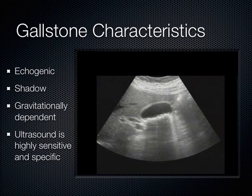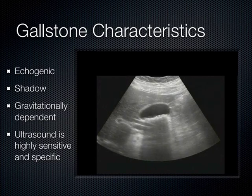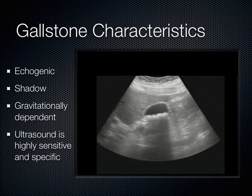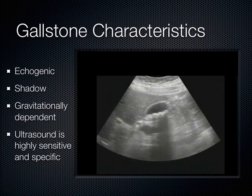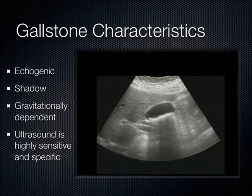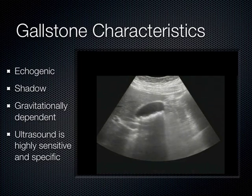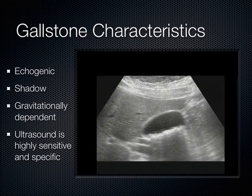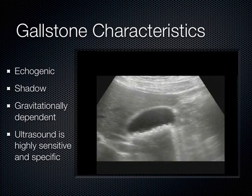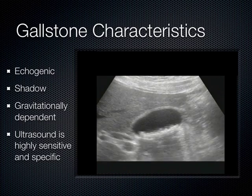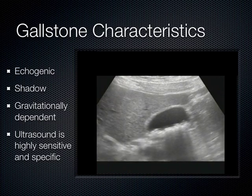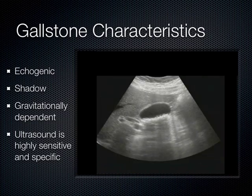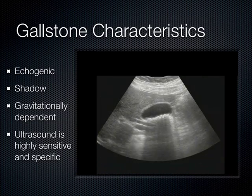When you find gallstones, they're hyperechoic, they shadow, and they're gravitationally dependent — they move around as you reposition the patient. These features make ultrasound the test of choice, more sensitive and specific than CT. With CT, you can miss a gallstone in a single cut, whereas ultrasound catches things CT misses when it comes to gallstones.